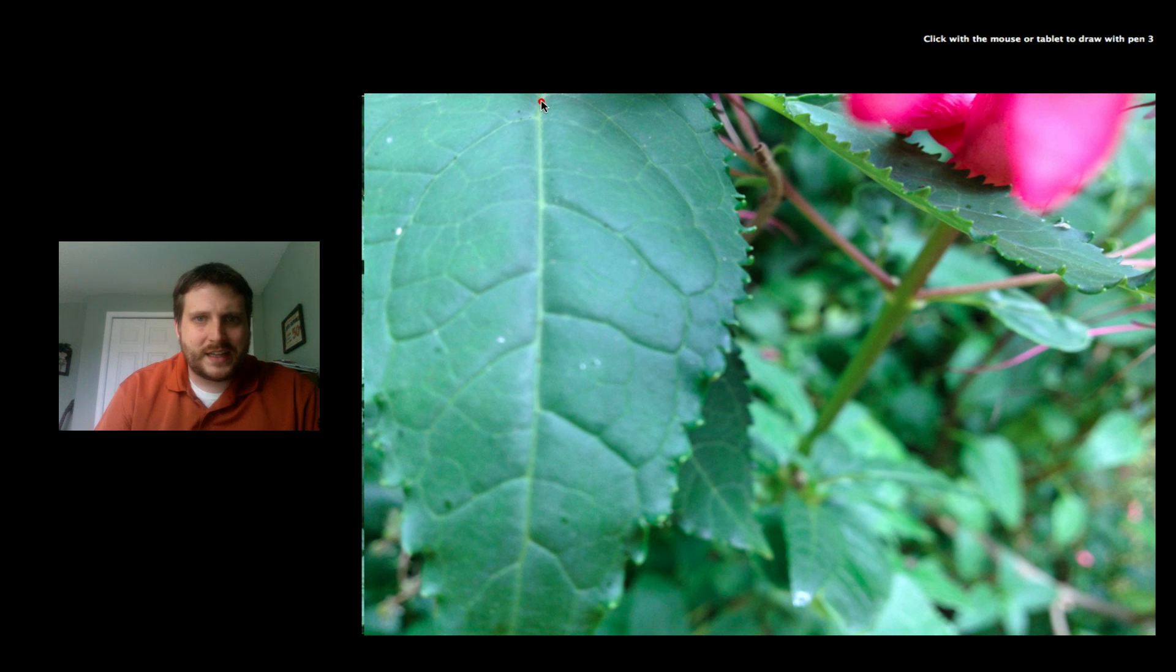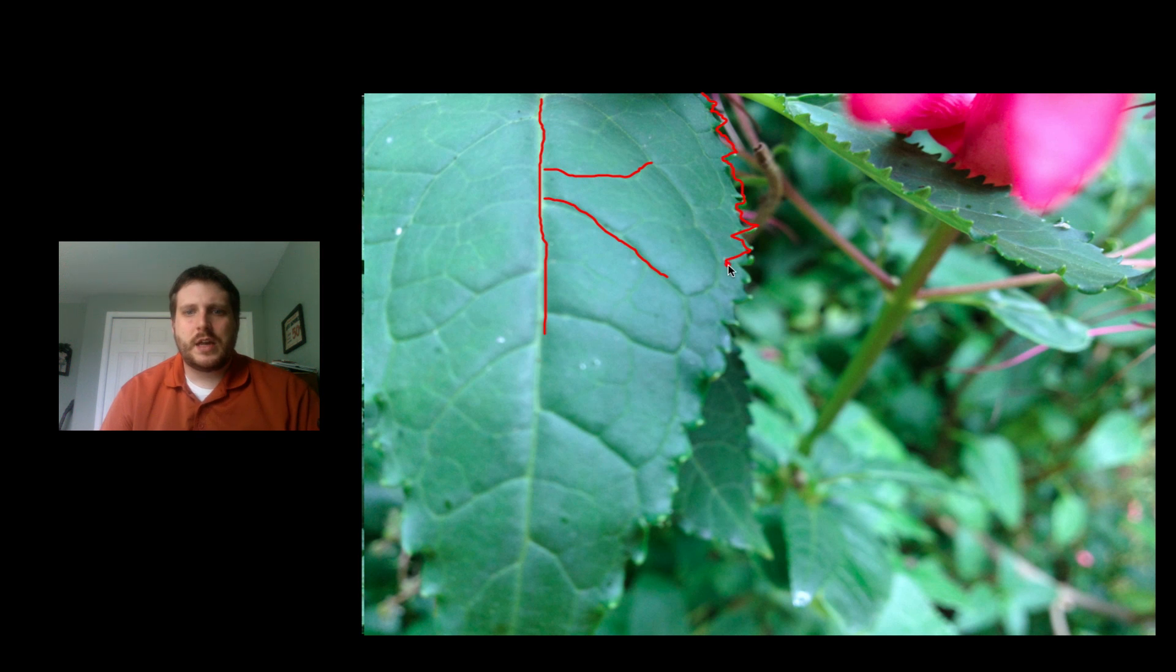Well, some of the things you might have said were the fact that you could see the veins in the leaf. You could see all the individual veins and the different patterns that they make. You might have said that the leaf has jagged edges. That's something you could see. You might have noticed the color of each individual stem. But you don't know necessarily is this a tree? Is this a shrub? Is this a flower up here? You don't exactly know what this is up here.